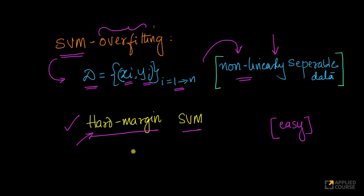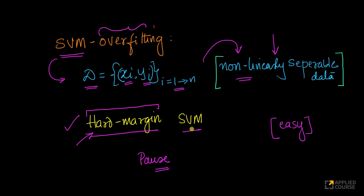Pause this video and think about answering this question on your own before checking the rest of the solution. So, the first fact given to us is a hard margin SVM, and the second fact is non-linearly separable data. Because you have non-linearly separable data, a linear SVM won't work.